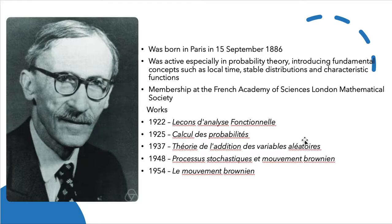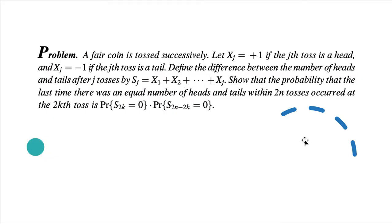The problem states that a fair coin is tossed successively. Let X_j = +1 if the j-th toss is a head, and X_j = -1 if the j-th toss is a tail.